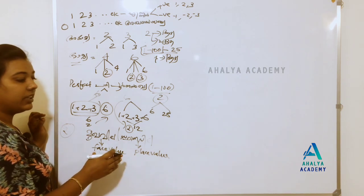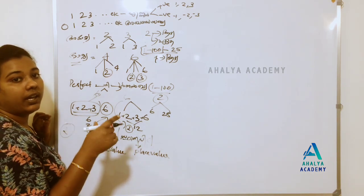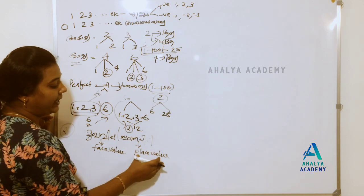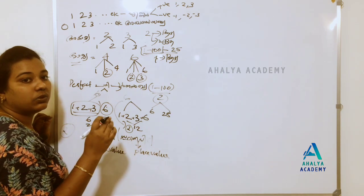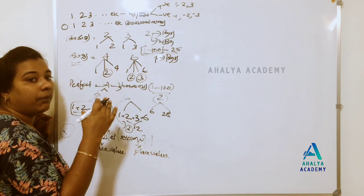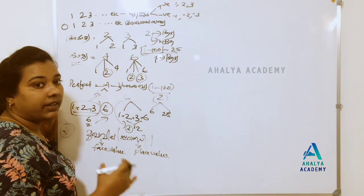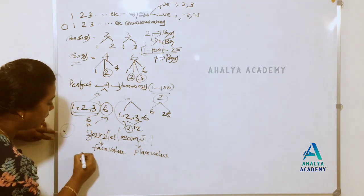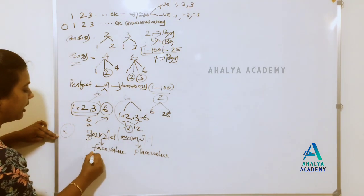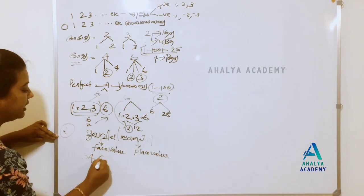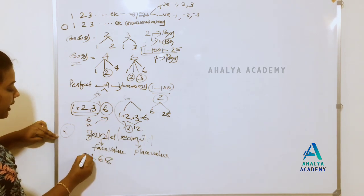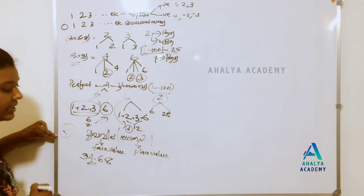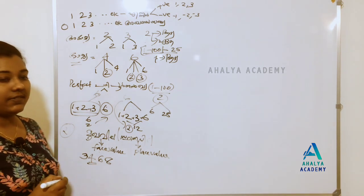Place value is 1 over 100. If you have any place value, you will be first. Let's take an example of a number: 35448 is the number. The digit 4 has both a face value and a place value.